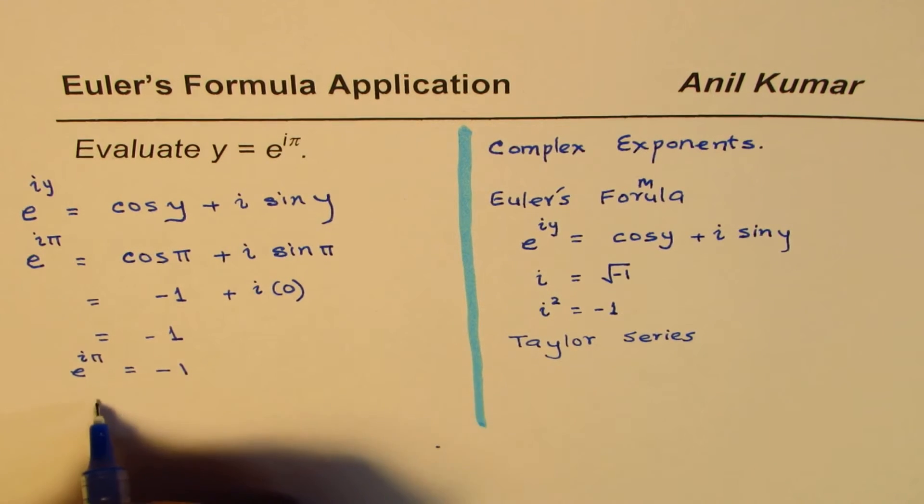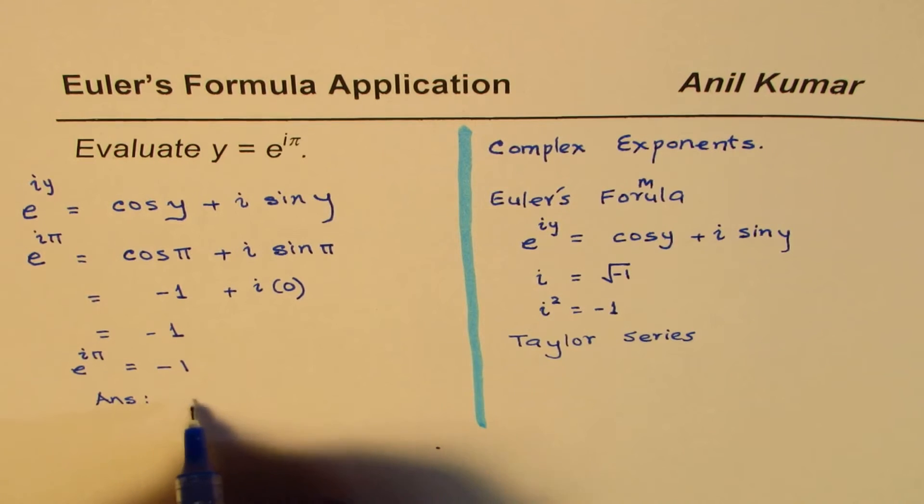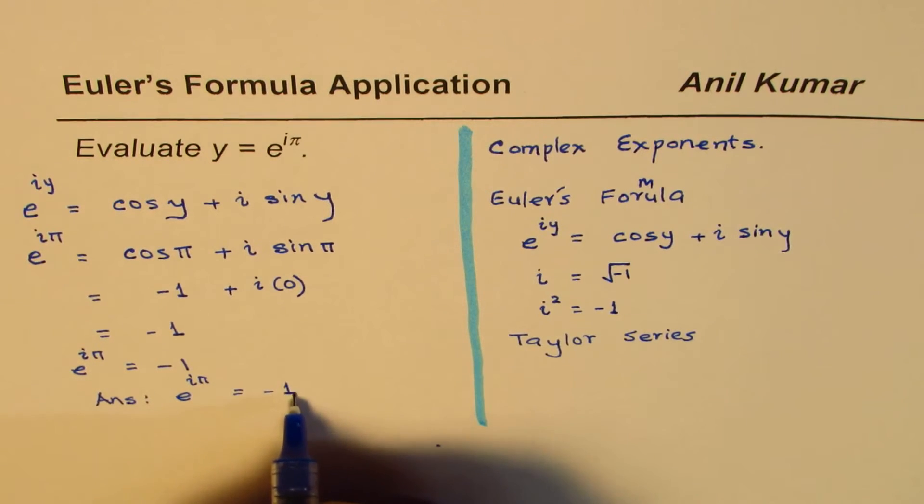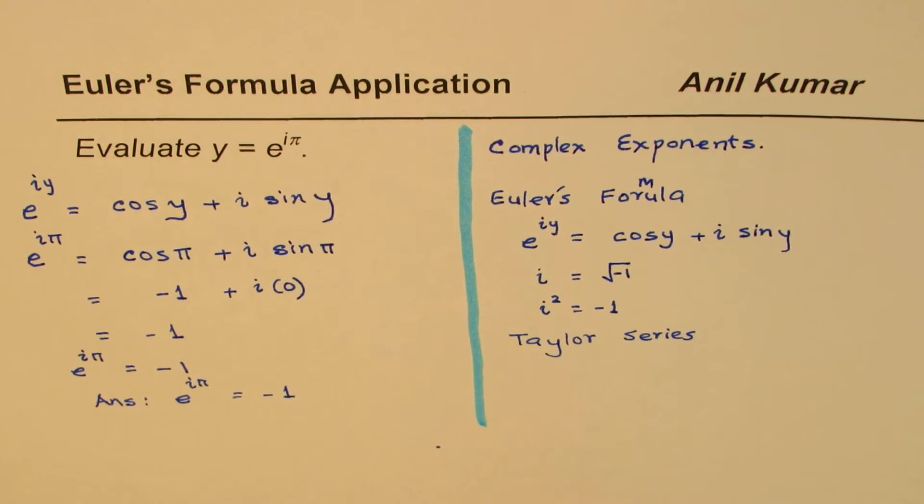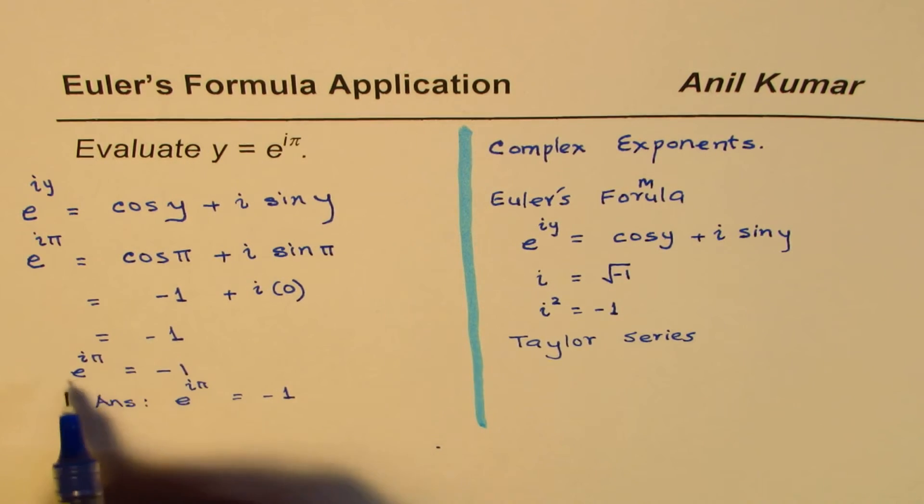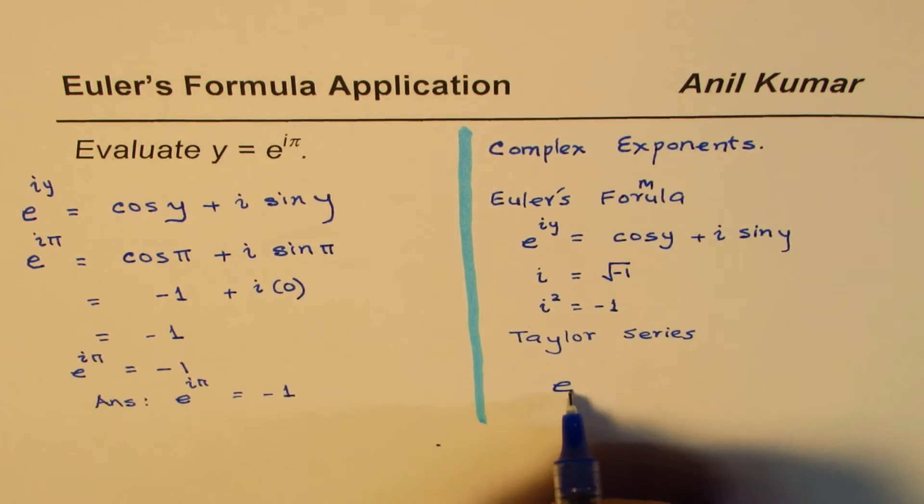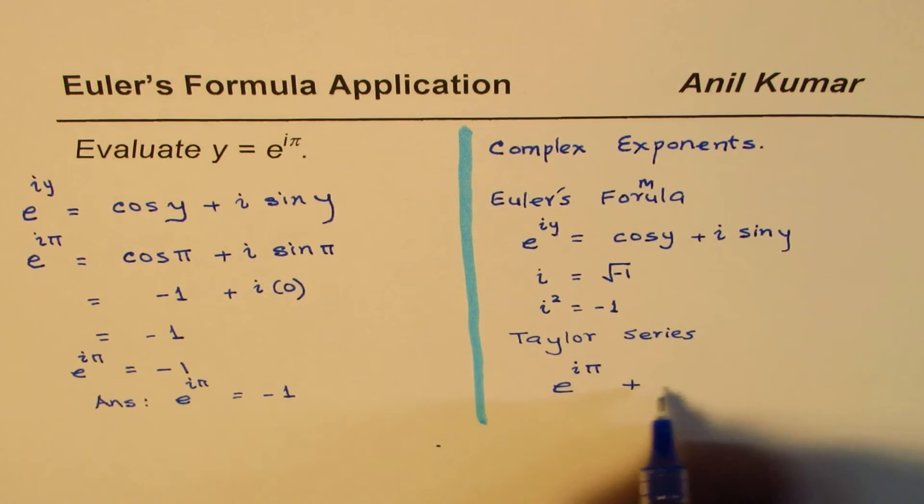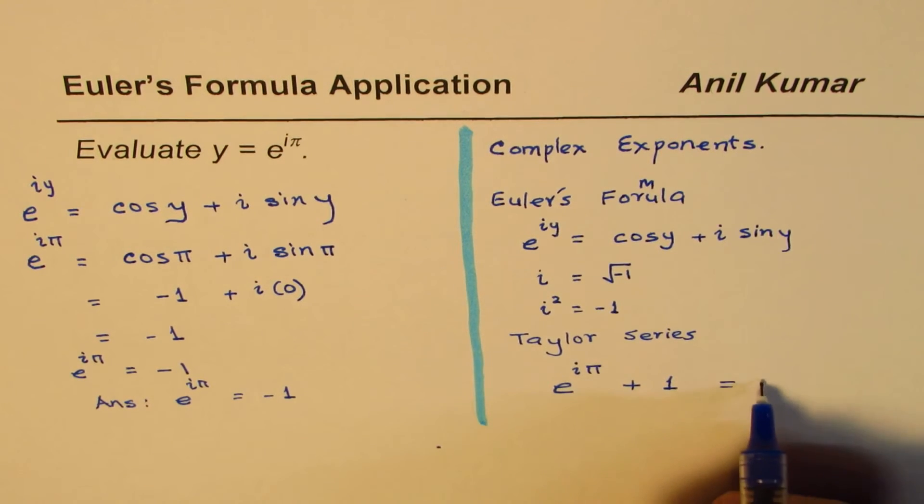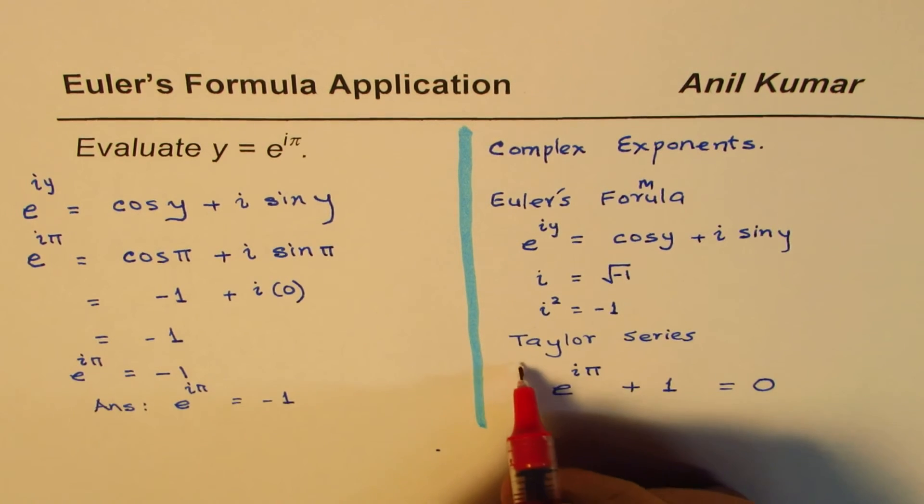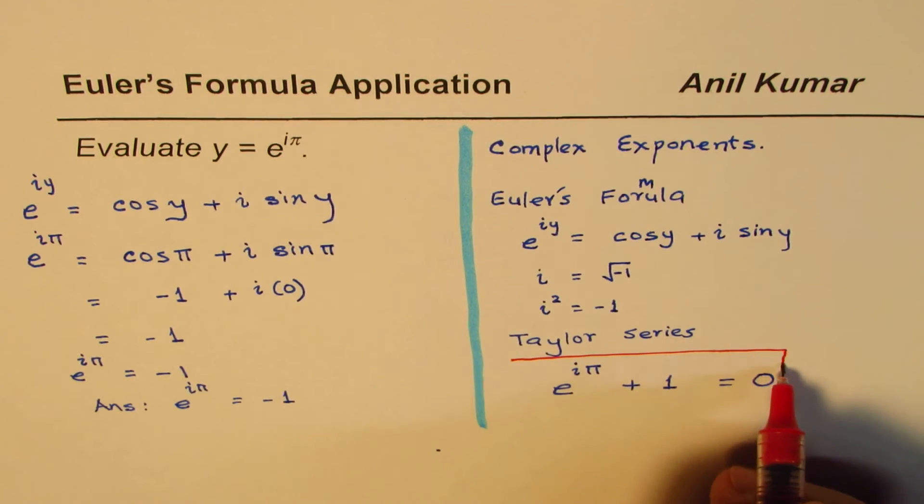So we have done the equation. The answer is e to the power of i pi is equal to minus 1. And the result which I am talking about is, I will write this minus 1 on the left side. So what we get here is that e to the power of i pi plus 1 equals to 0. Now, here we have all the very important numbers which we have been talking about.